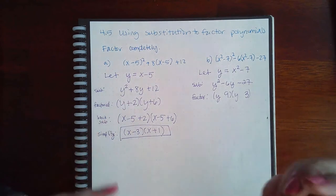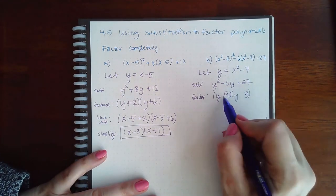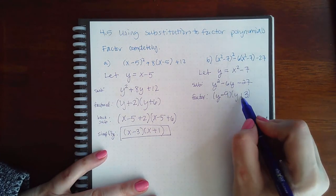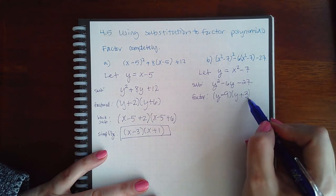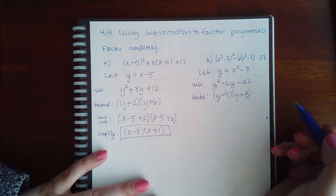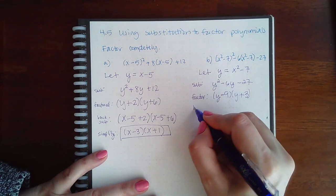The bigger number having to be negative, so then that means this one has to be positive, so that when I multiply I get negative 27. And when I do negative 9 plus 3, I get negative 6. And now we're going to back sub.